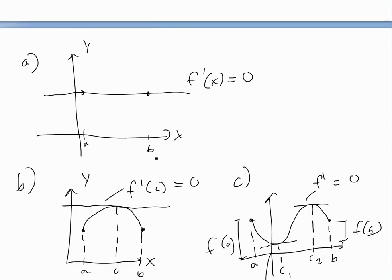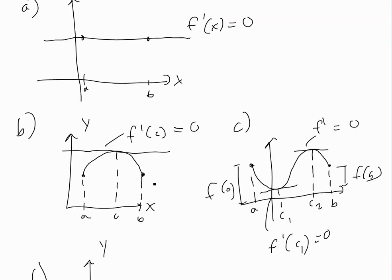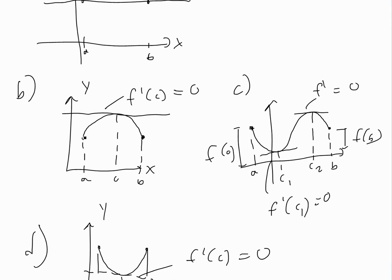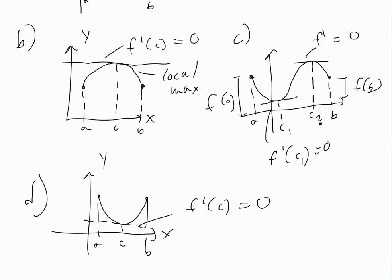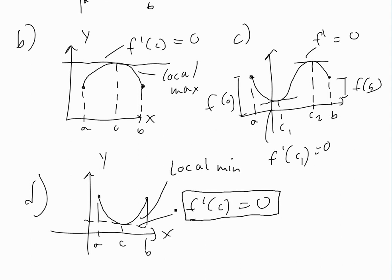As shown in my other video on local maximum and local minimums, if you have a function with a local max, then f prime equals zero at that point. The function with a wavy shape has both a local max and a local min, and a local min or max satisfies f prime equals zero if the function is continuous and differentiable.